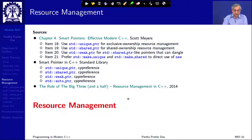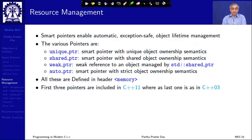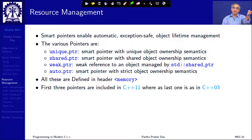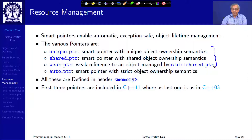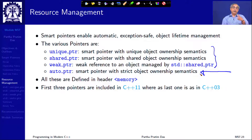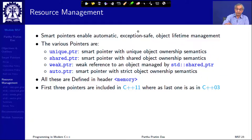There are four kinds of smart pointers: `unique_ptr` with exclusive ownership and destructive copy, `shared_ptr` which shares the ownership, `weak_ptr` which refers to an object managed by some other shared pointer so that cyclic references can be avoided, and `auto_ptr` which exists in C++03. However, `auto_ptr` is deprecated in C++11 and completely removed in C++17, so unless you are restricted to C++03 only, do not use it. All of these are available in the `<memory>` component of the library.